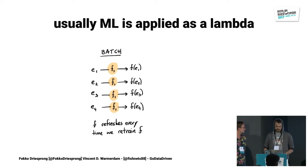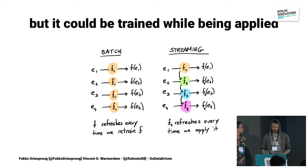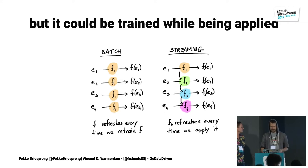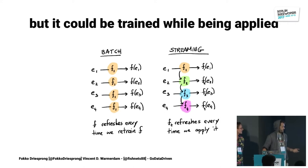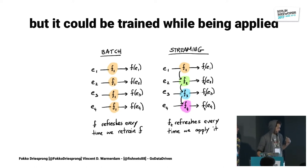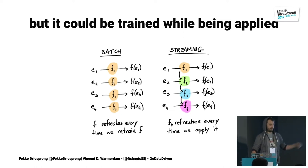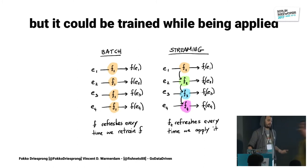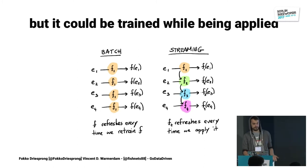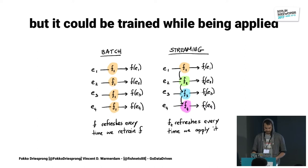What we are going to talk about today in particular is a situation where every point of data that the machine learning algorithm gets will also allow the function to update. The function changes for every single data point we see. This means that not only can we apply a machine learning function in streaming, we can actually learn from it in streaming.